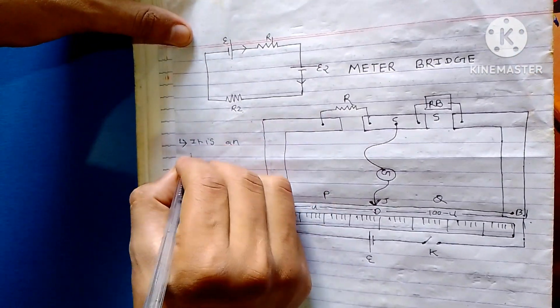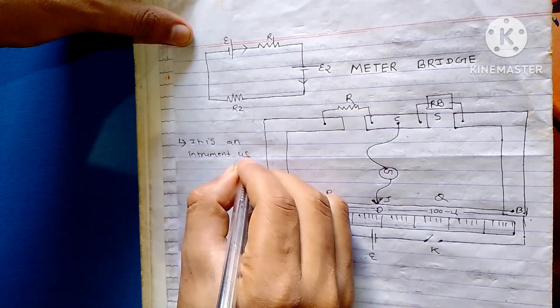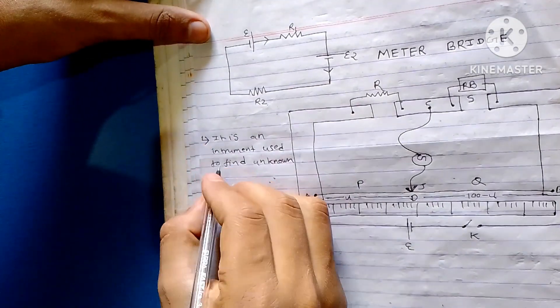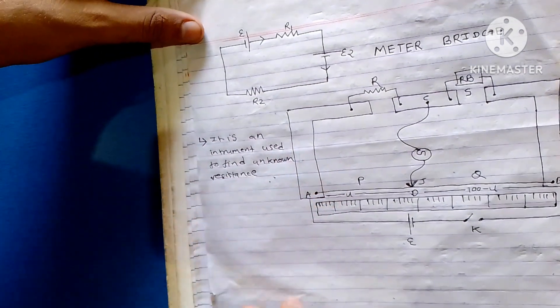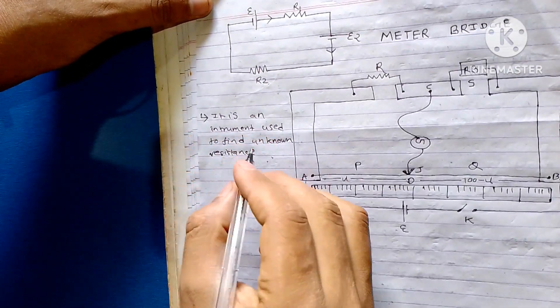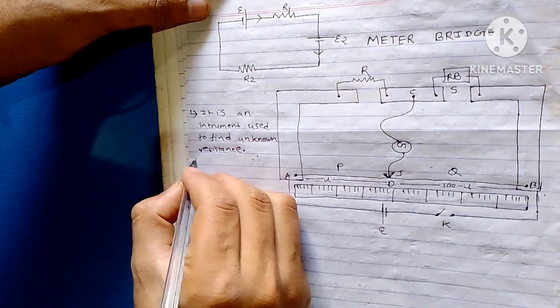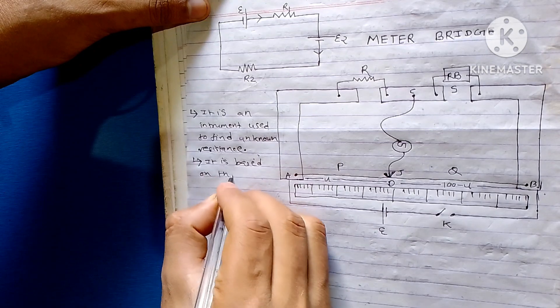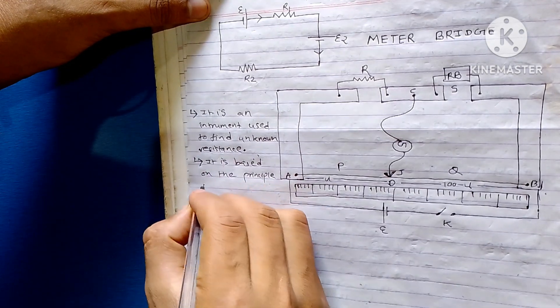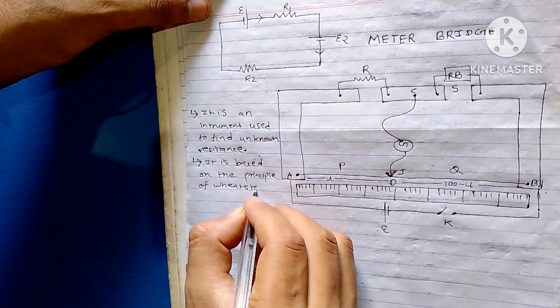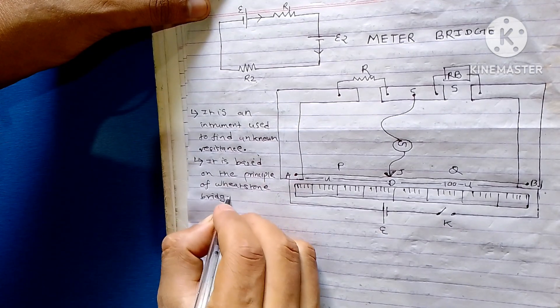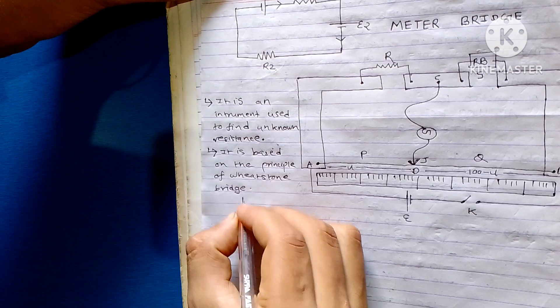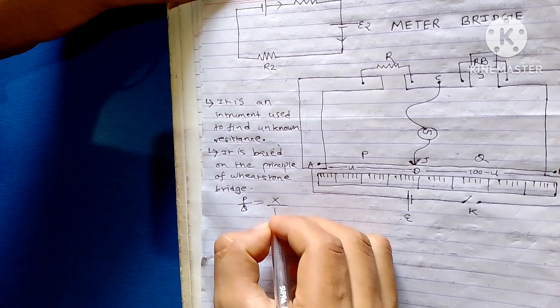This is an instrument used to find unknown resistance. This is an electrical instrument for unknown resistance. It is based on the principle of Wheatstone bridge. The Wheatstone bridge principle is based on P upon Q is equal to X by R. That is the principle of Wheatstone bridge.